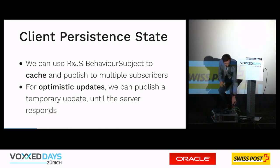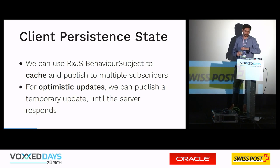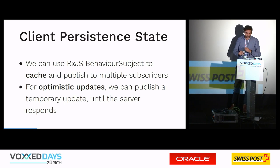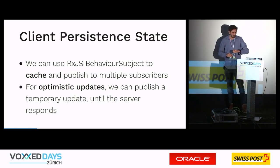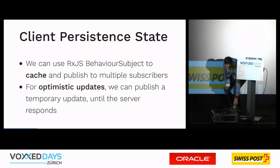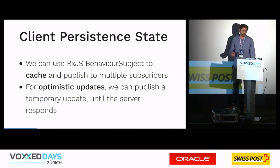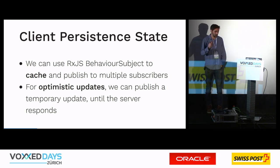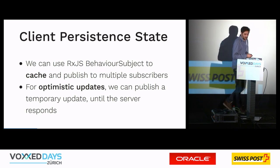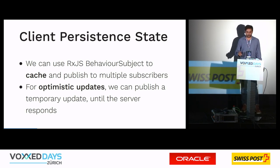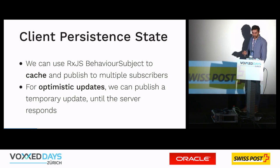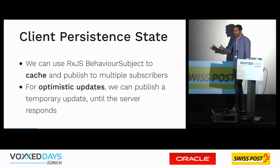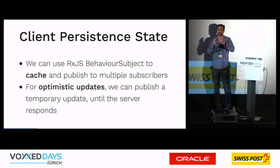This is a distribution and synchronization issue. If we have a lot of components relying on the same server state, we need additional synchronization. In order to solve this, we could use something called client-persistent state. Client-persistent state can be implemented in many ways, but in this example we make use of RxJS, which already comes with Angular. We're using a BehaviorSubject, which is an observer and an observable at the same time, to build up a kind of cache in the client that caches whatever is on the server.